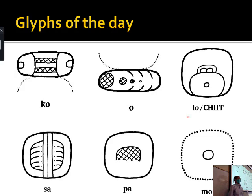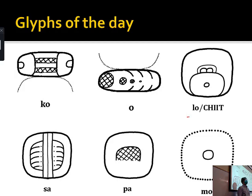And it is also similar to the syllable 'to,' except in this case there is no upper element, and the sign can be split along the middle, so you can sometimes see just half of it. This is the syllable 'pa,' and it's actually not black — it's really cross-hatching. In painting and carving, it basically shows a piece of net. Ancient Mayas thought men dressed in full-body net suits are funny.